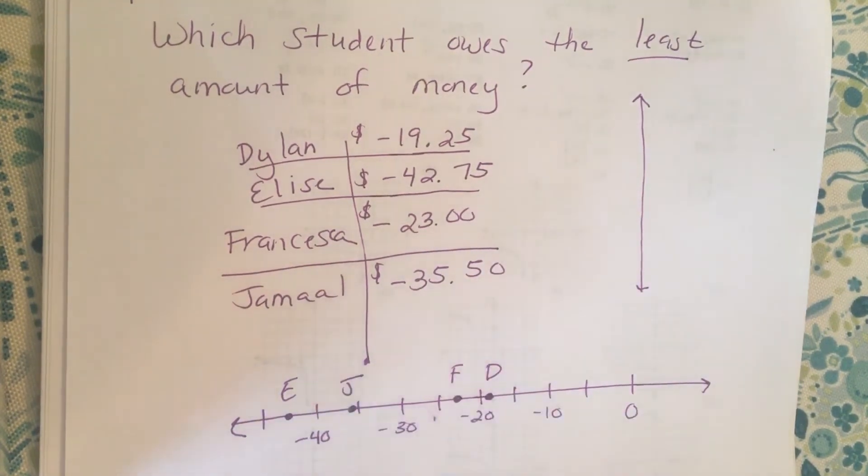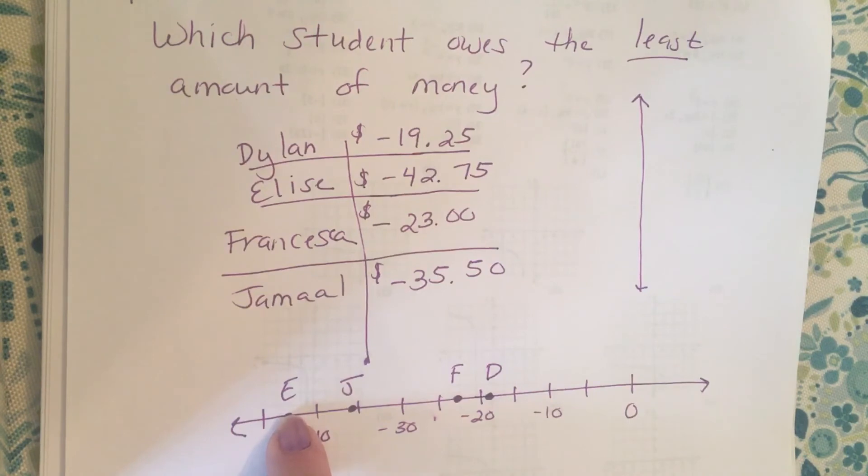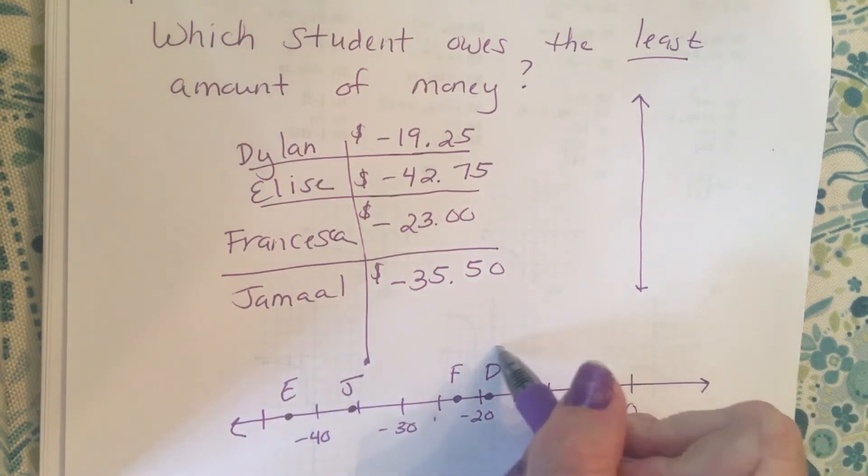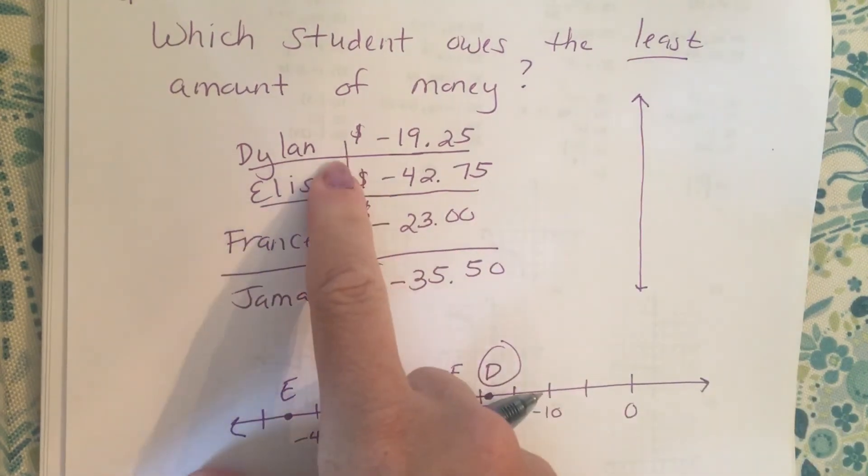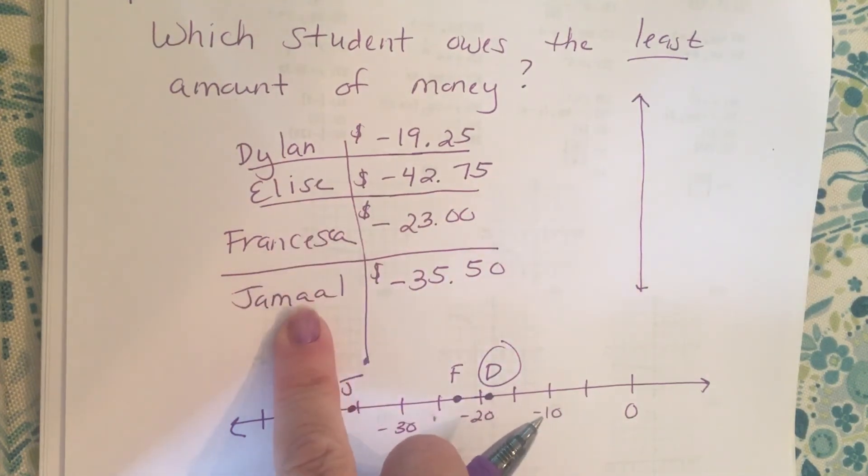All right, as we move the number line towards the right, the numbers are increasing. So the student who owes the least amount of money is the student who's closest to zero, and so that would be Dylan. Dylan owes money, but Dylan owes less money than Francesca or Elise or Jamal.